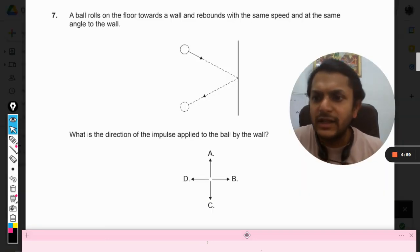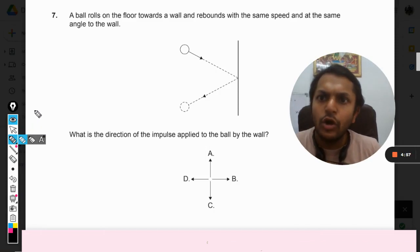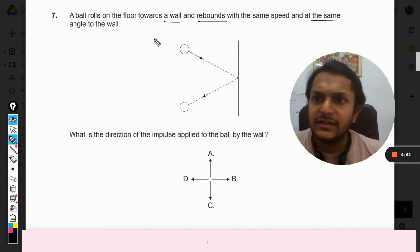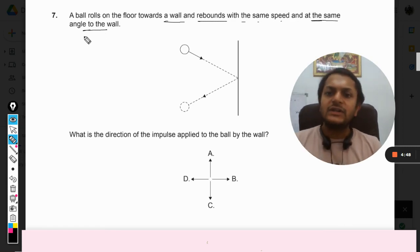Okay, dear students, let us see this question. A ball rolls on the floor towards a wall and rebounds with the same speed and at the same angle to the wall. What is the direction